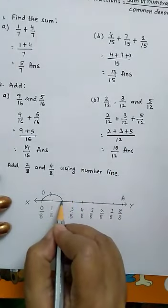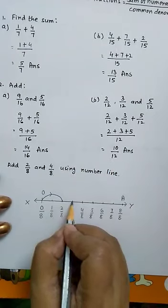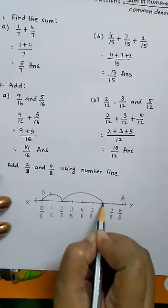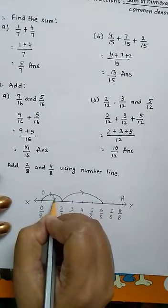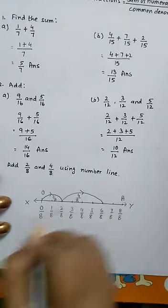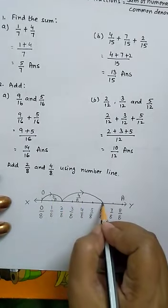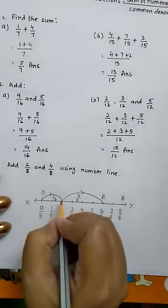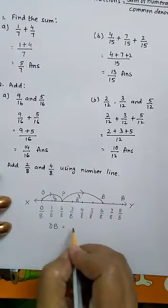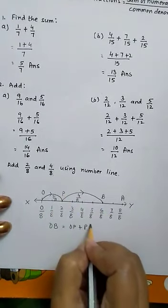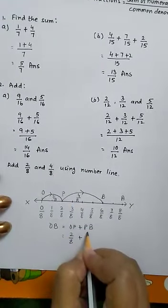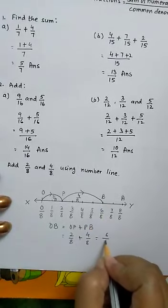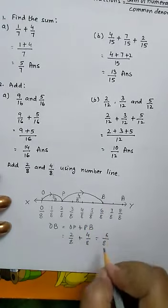Here is 2. When we move 4 steps ahead then we will reach on 1, 2, 3 and 4. We will reach at 6. So this is 2 by 8 and this is 4 by 8. So by adding 2 by 8 and 4 by 8 we get the answer 6 by 8. Here OB equals to we can mark this point as P. OP plus PB that is 2 by 8 plus 4 by 8 equals to where we reach 6. So OB will represent the sum of these two fractions as 6 by 8.